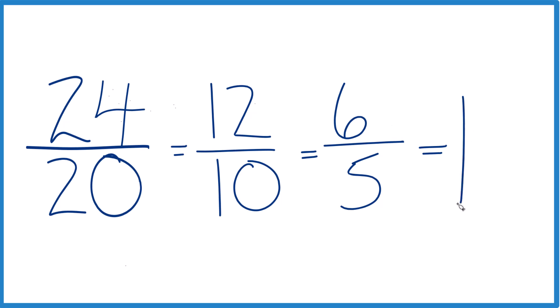5 goes into 6 one time with 1 left over, and we just bring the 5 across here, and 6 fifths equals 1 and 1 fifth.